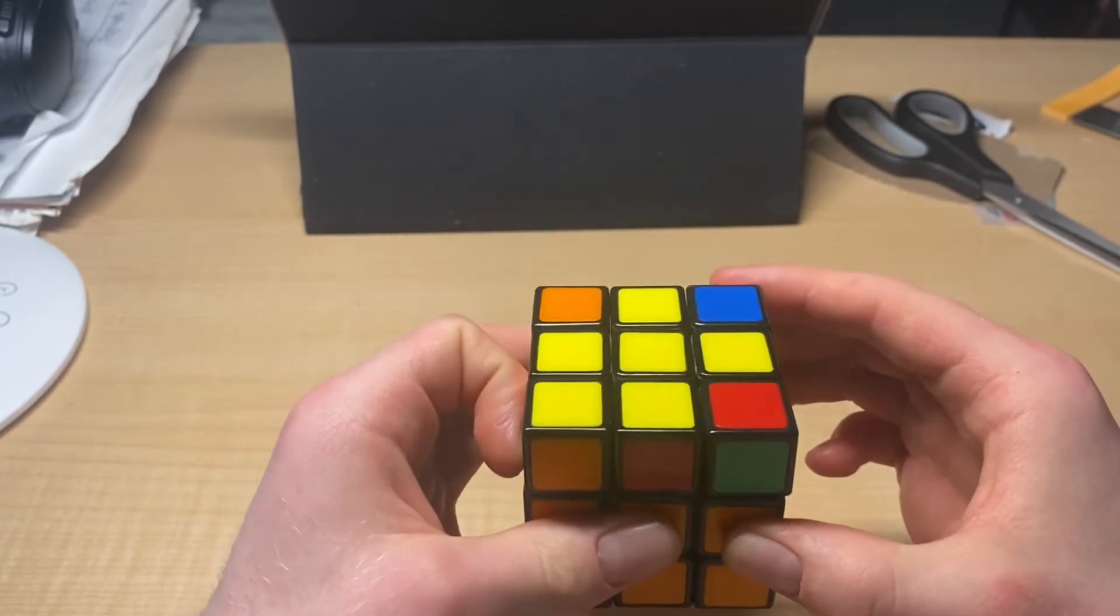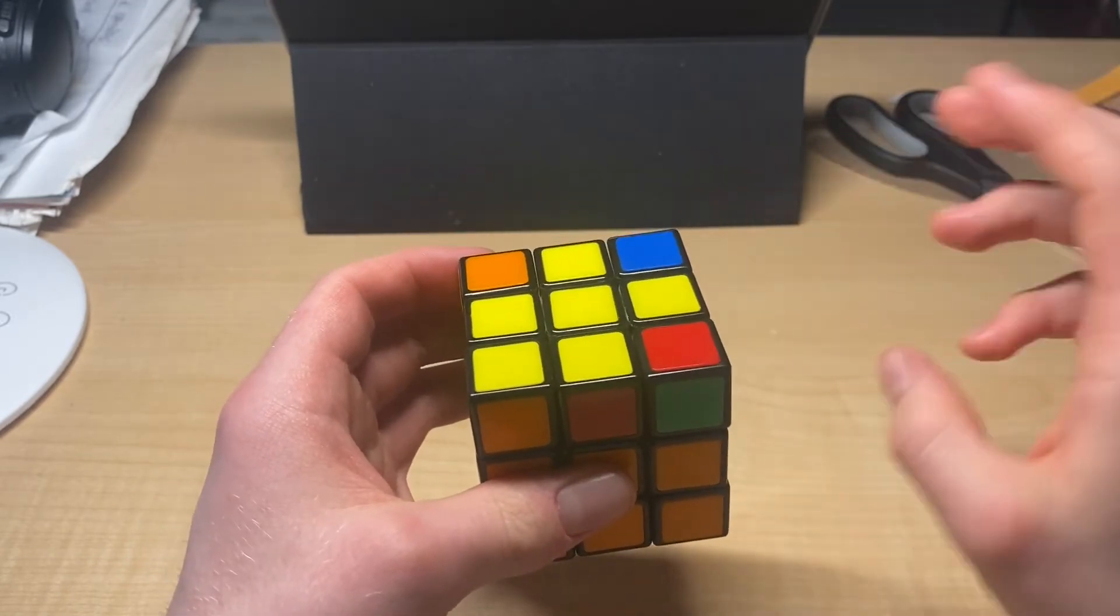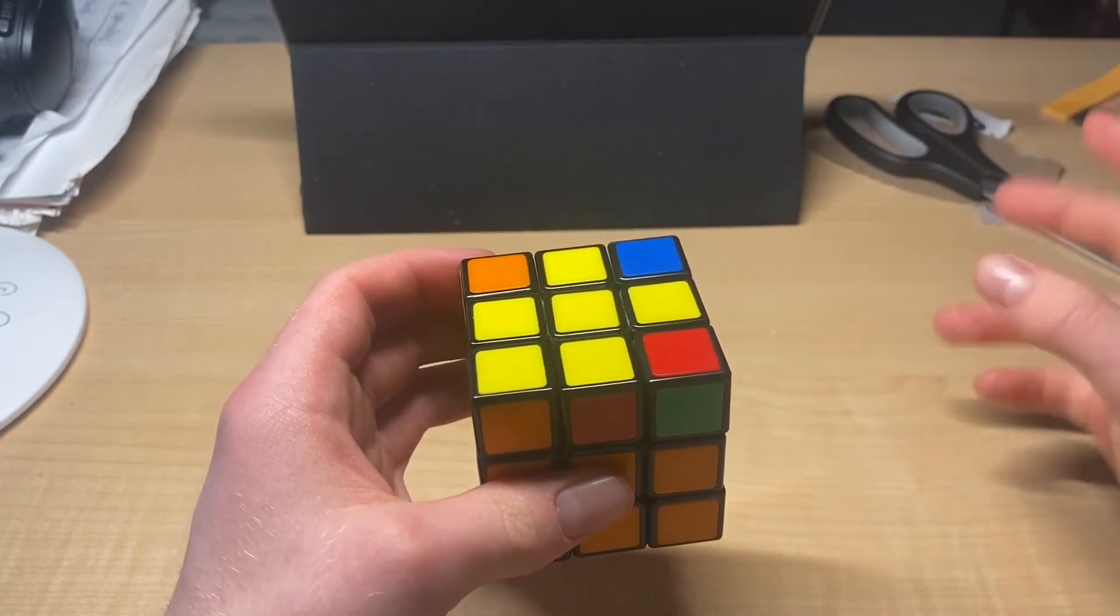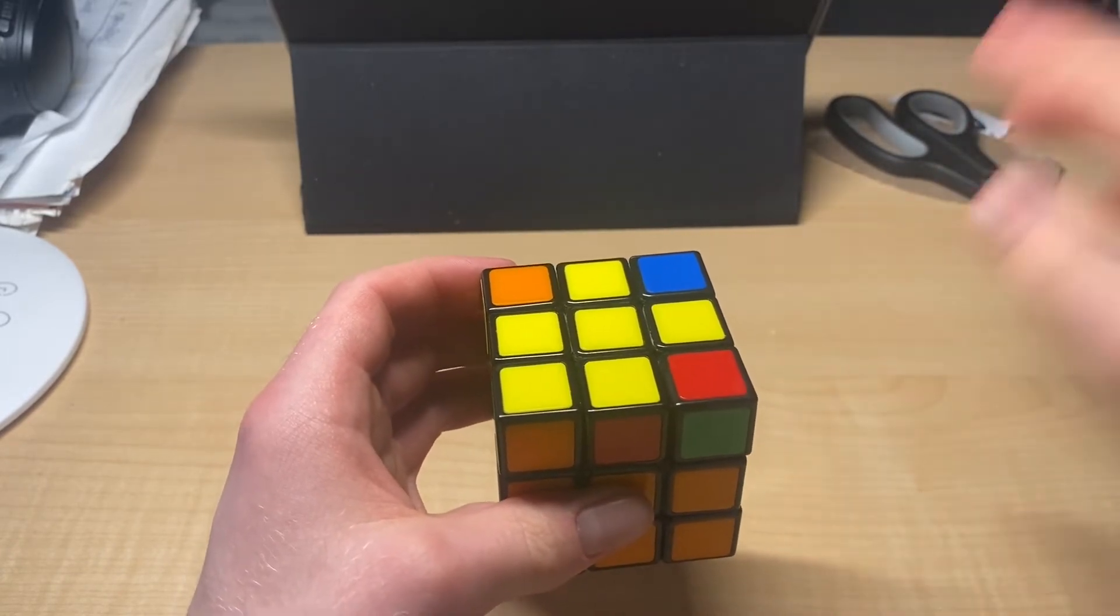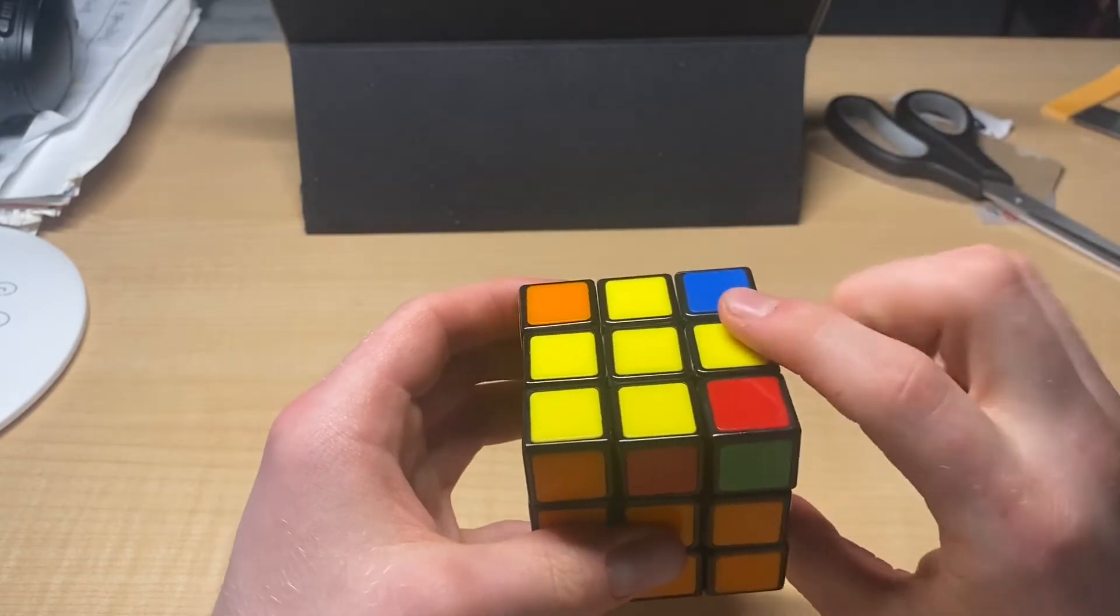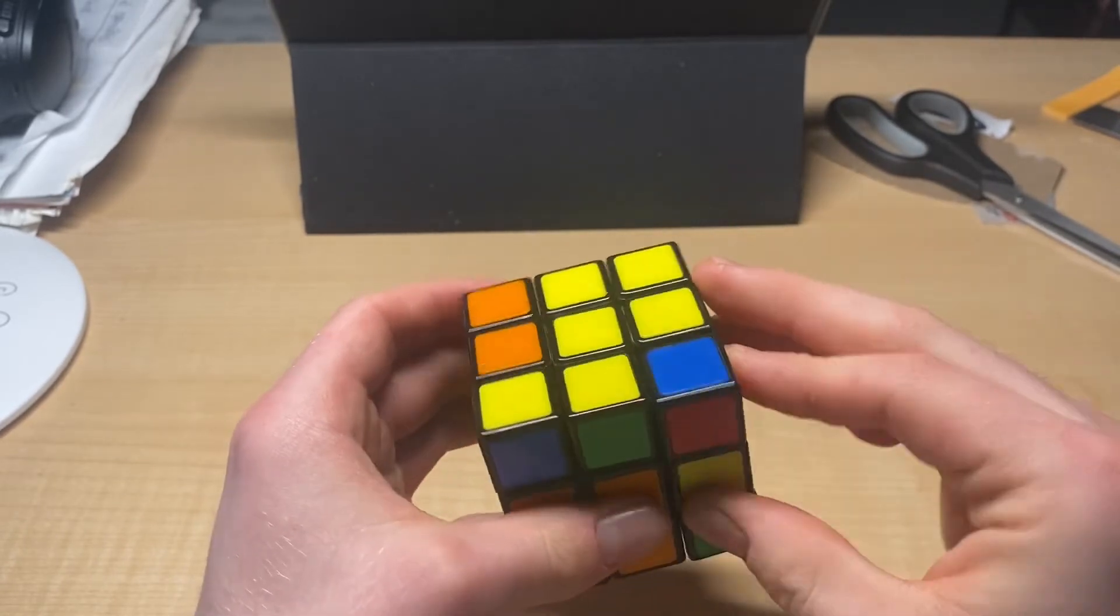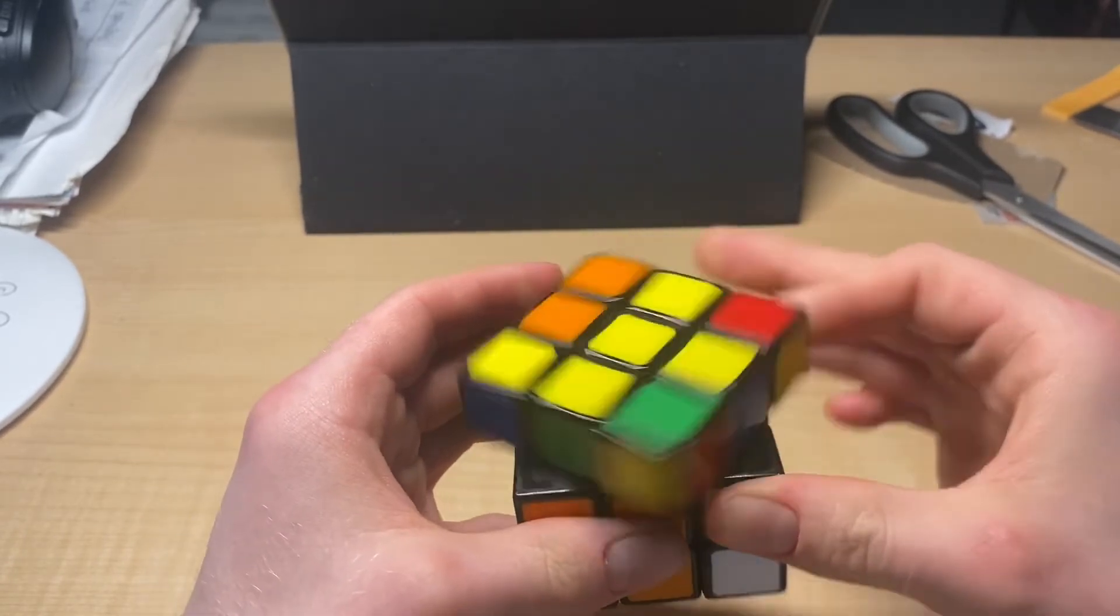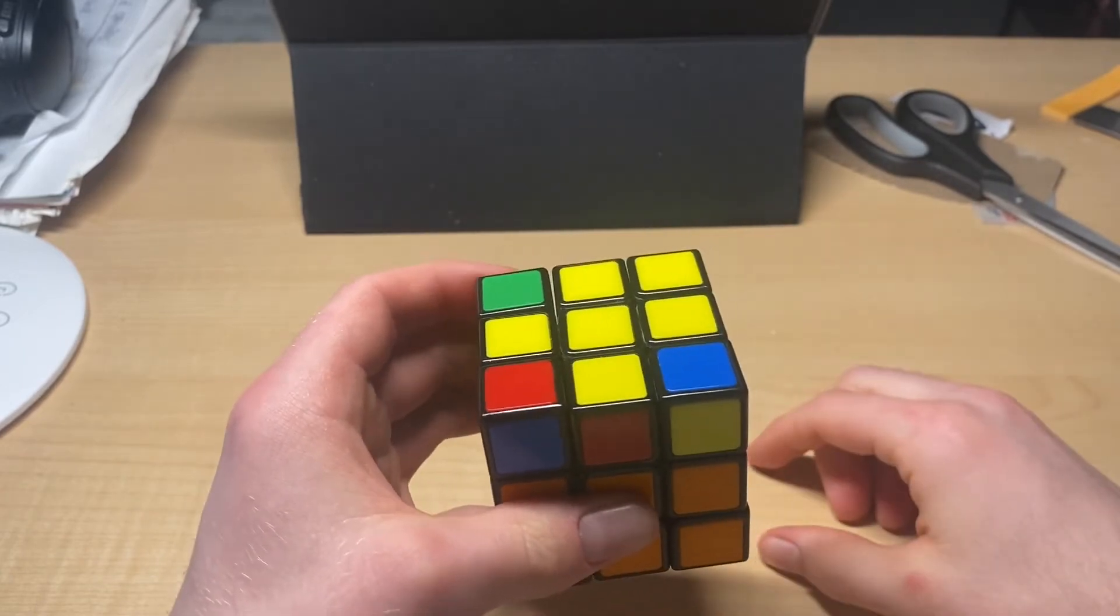All right. Now, we bring that face here. We've got anti-sun, which if you know, you just need to do the sun algorithm twice. Or if you know the anti-sun one, which we'll show you in the advanced OLL video, you would just do that one. So, this here is R, U, R prime, U, R, U2, and R prime.